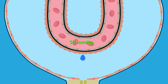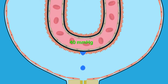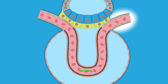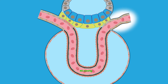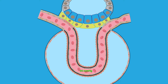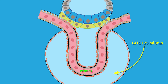This causes the hydrostatic pressure to decrease along the length of the glomerular capillary. To avoid the decrease, the efferent arteriole applies resistance, which helps maintain the glomerular capillary hydrostatic pressure at about 50 mmHg, which typically yields a GFR of about 125 mL per minute.